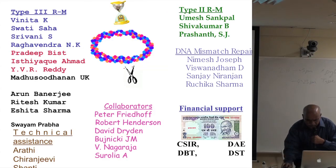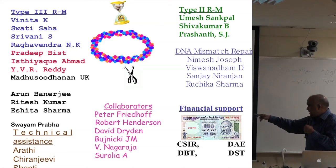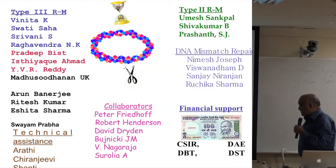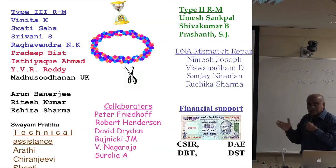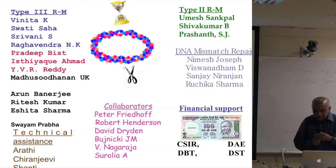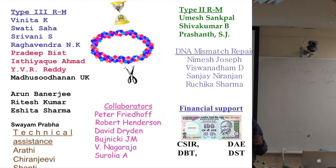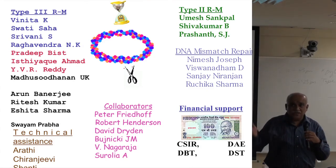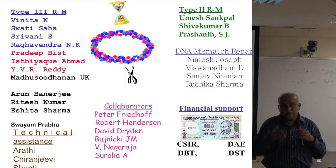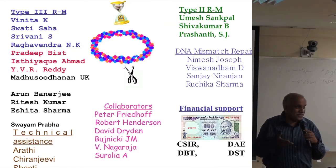Most of the work from my lab on type 3 enzymes has been done by the people listed here, with collaborations with Robert Henderson and David Dryden on AFM experiments. These enzymes, discovered long ago, continue to reveal new complexity — biochemistry, structural biology, and the biology of restriction are all becoming more interesting. There is a lot more to be done, and I intend to continue working on type 3 enzymes for the next several years.